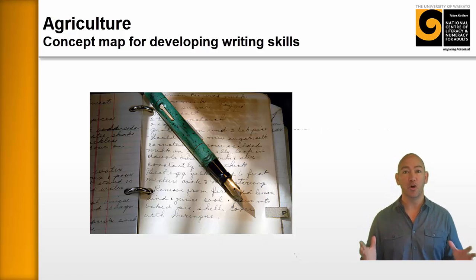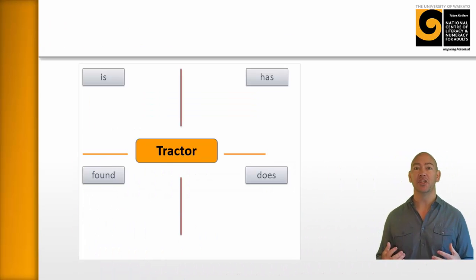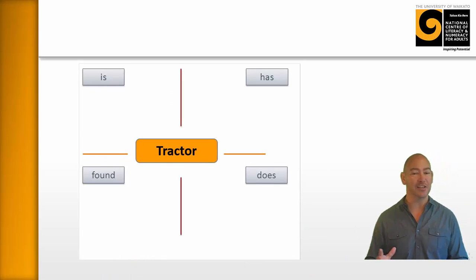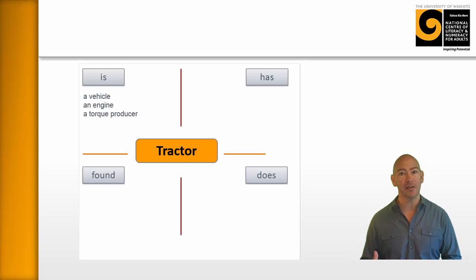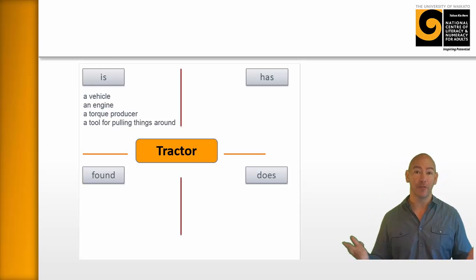The first thing we need is some content. Here were some ideas that some learners put down when they were asked to generate some ideas about what a tractor is. They said a tractor is a vehicle, is an engine. Somebody said it's a torque producer. Somebody said it's a tool for pulling things around, a mechanical vehicle. Great. That's all we need for now.